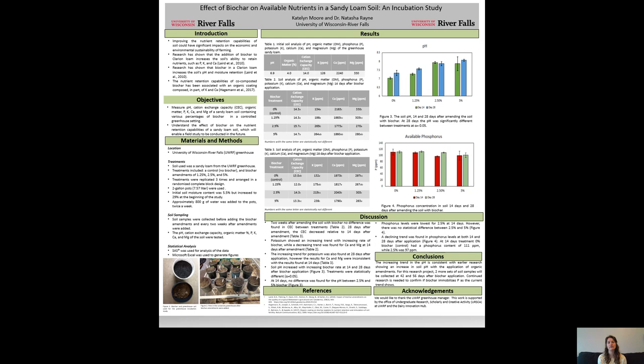These results can be seen in tables 2 and 3. The pH of the soil did show statistical differences among treatments, with an increasing trend that correlated with increasing rates of biochar for both sampling periods, 14 days and 28 days after biochar application. But there was no statistical difference between treatments with 2.5% biochar and 5% biochar at the 14-day sample.